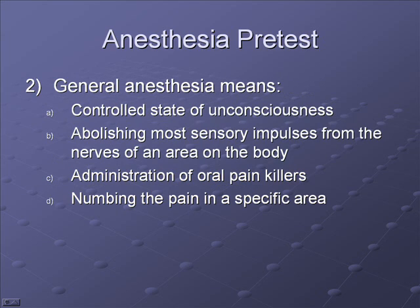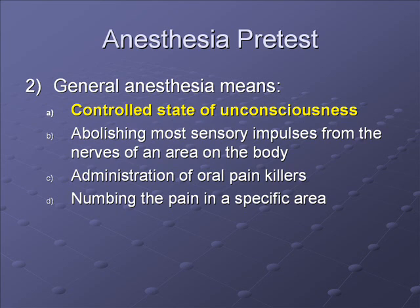Question 2: General anesthesia means — A. Controlled state of unconsciousness, B. Abolishing most sensory impulses from the nerves of an area on the body, C. Administration of oral painkillers, or D. Numbing the pain in a specific area. The correct answer is A — a controlled state of unconsciousness. B is incorrect because during general anesthesia, the entire body is affected, not just a certain area.